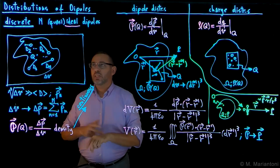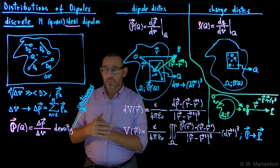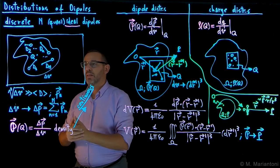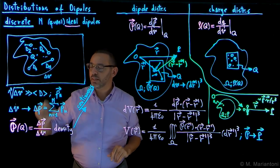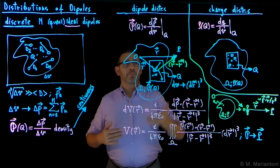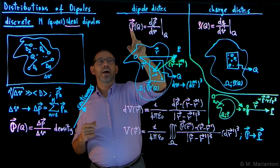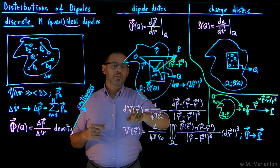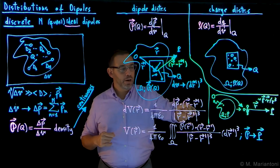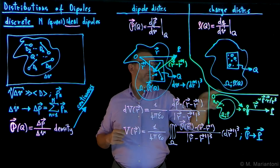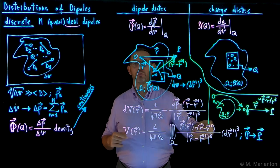To summarize: we considered a distribution of dipoles, which is useful for understanding dielectric materials. Starting with discrete quasi-ideal dipoles (capital N of them in a physics infinitesimal delta V), we defined the total delta P by summing all dipole moments, and dividing by delta V gives the density. Taking the derivative gives the continuous case: scalar rho equals dq/dV for charges; vector P equals dP/dV for dipoles. The potential due to an infinitesimal volume of dipoles uses R minus R prime — not just R — because we have a full distribution. Integrating yields the final expression, useful for the polarization vector.